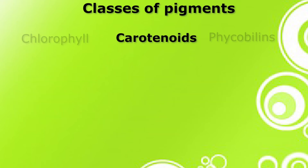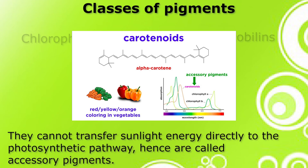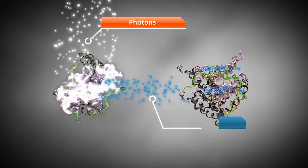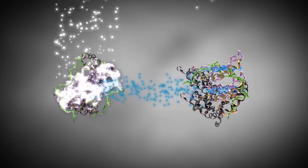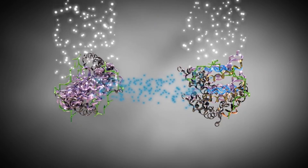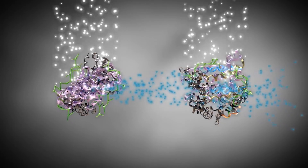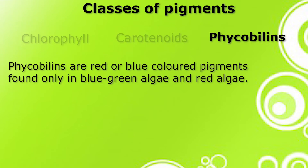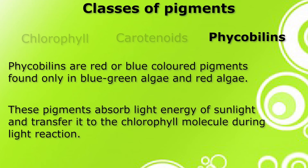Carotenoids are usually red, orange, or yellow pigments. They cannot transfer sunlight energy directly into the photosynthetic pathway, hence they are called accessory pigments. They pick up nascent oxygen released during photo-oxidation of water and convert it into molecular state, thereby protecting chlorophyll molecules from photo-oxidation. Phycobilins are red or blue colored pigments found only in blue-green algae and red algae. These pigments absorb light energy and transfer it to the chlorophyll molecules during the light reaction.